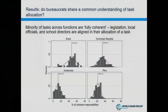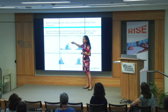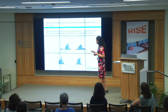We see a lot of variation across countries. Looking from the school director's perspective — their responses compared to local officials and legislation — we call this 'full coherence.' In Guatemala, school directors are identifying on average only 13 percent of tasks as fully coherent. In Brazil, 47 percent of tasks are fully coherent. So there's a wide range of variation across the countries in our sample.